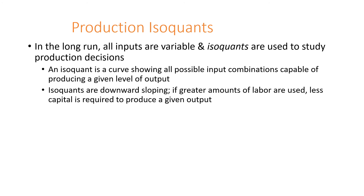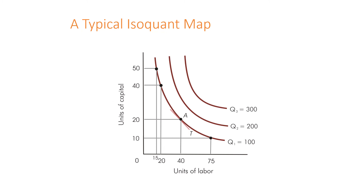In the long run, all inputs become variable and we use isoquants to study production combinations and decisions. An isoquant is a curve showing all possible input combinations capable of producing a given level of output. Isoquants are downward sloping, meaning that if greater amounts of labor are used, less capital is required to produce a given level of output. Here is a typical isoquant map where units of capital are on the vertical axis and units of labor on the horizontal axis. At point A, with 40 units of labor and 20 units of capital, we can reach an output of 100 units.